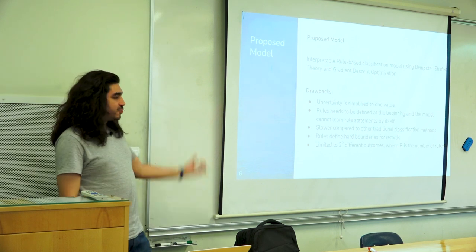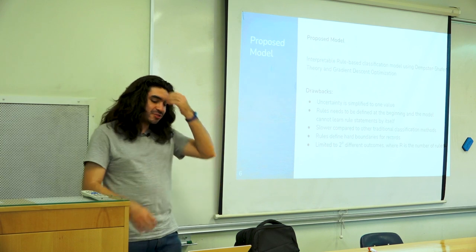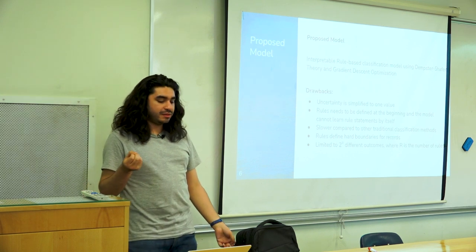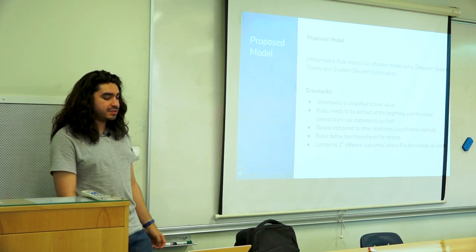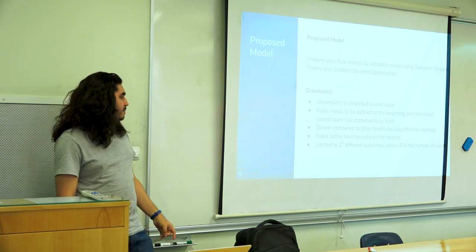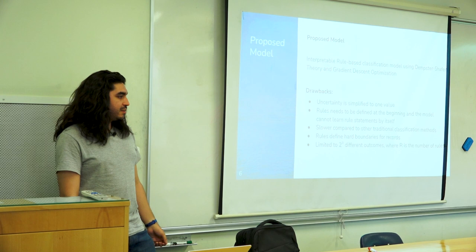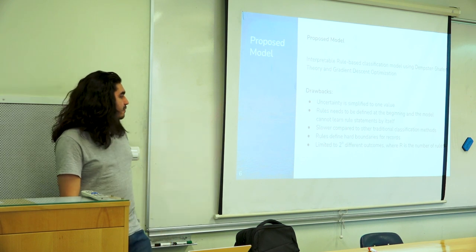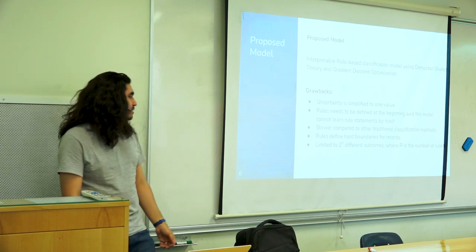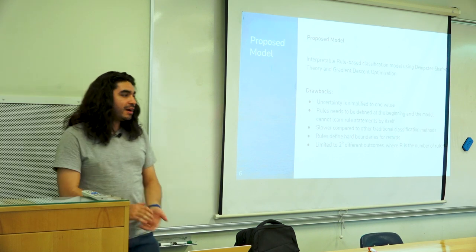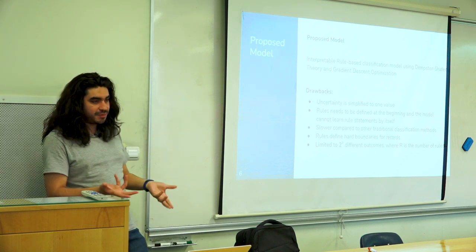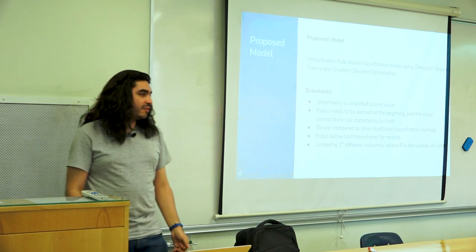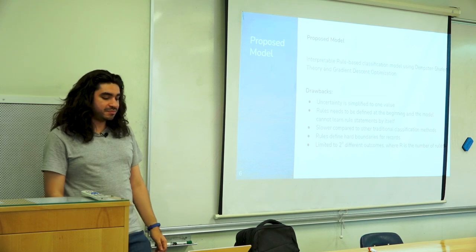The model has drawbacks. One is about the Dempster-Shafer implementation we use — uncertainty is simplified to one value. You can have many different combinations of mass outcomes that the theory proposes, but we are only using one uncertainty for the mass-assignment function. That is a limitation because we don't have the full expressibility of Dempster-Shafer theory, but we do this because of performance — if you have the full subset array of masses, you have exponential-length computations in every step, which is very expensive.